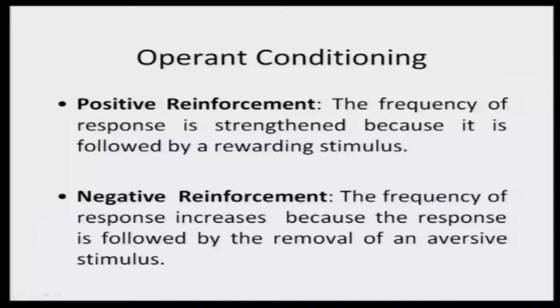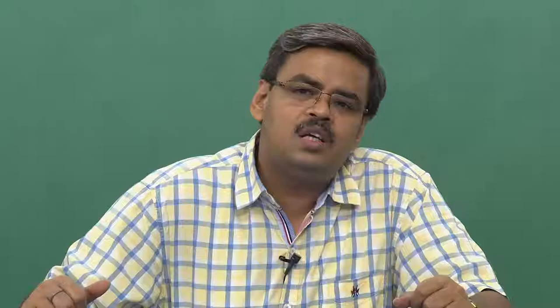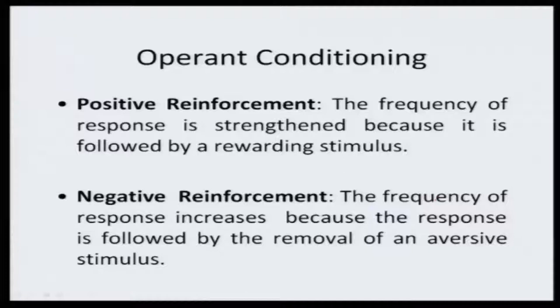Operant conditioning describes two types of situations. You can have positive reinforcement that shapes behavior, or negative reinforcement that shapes behavior. Positive reinforcement basically means the frequency of response gets strengthened because it is followed by a rewarding stimulus — you produce a desired behavior and the desired response gives you a reward. The first case — positive reinforcement — was the case of the pigeon, because the pigeon's response got strengthened every time it came forward with the correct response and a reward was given.